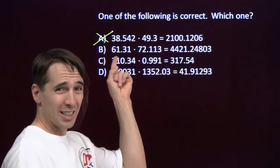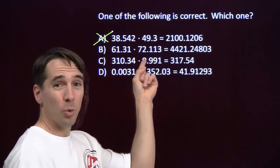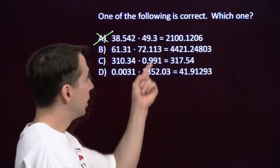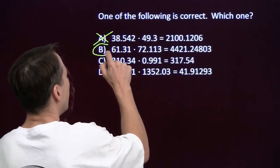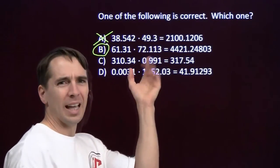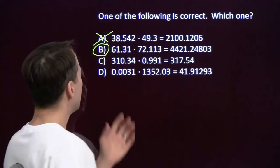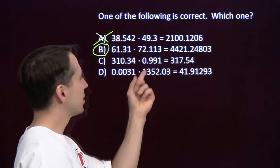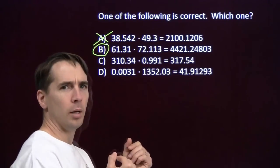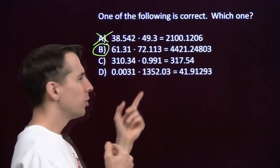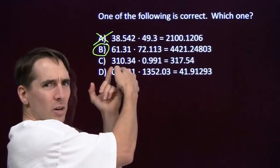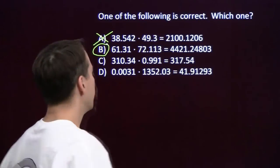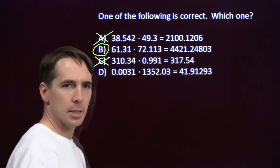On my next one, I've got a number that's a little more than 60, and I'm multiplying by a number that's a little more than 70. I should get a product that's a little more than 4,200. That one is a little more than 4,200, so I think my calculator got that one right. The next one: I've got a number that's a little more than 310, and I'm multiplying it by a number that's a little less than 1. If I multiply by a number less than 1, the result should be less than what I started with — less than 310. That's not less than 310, so the calculator missed that one.